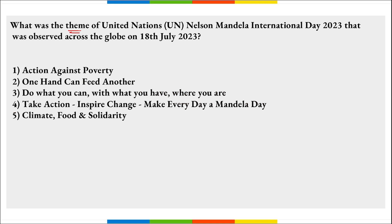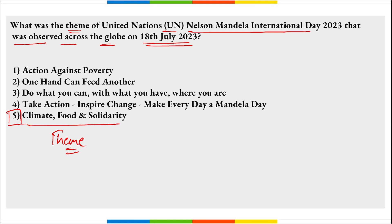What was the theme of UN Nelson Mandela International Day observed on 18th July 2023? The theme is 'Climate, Food and Solidarity.' The day marks the birth anniversary of Nelson Mandela, who played an eminent role in creating a non-racial constitution and democratic South Africa. In 2023, we observed the 105th birth anniversary of Nelson Mandela.